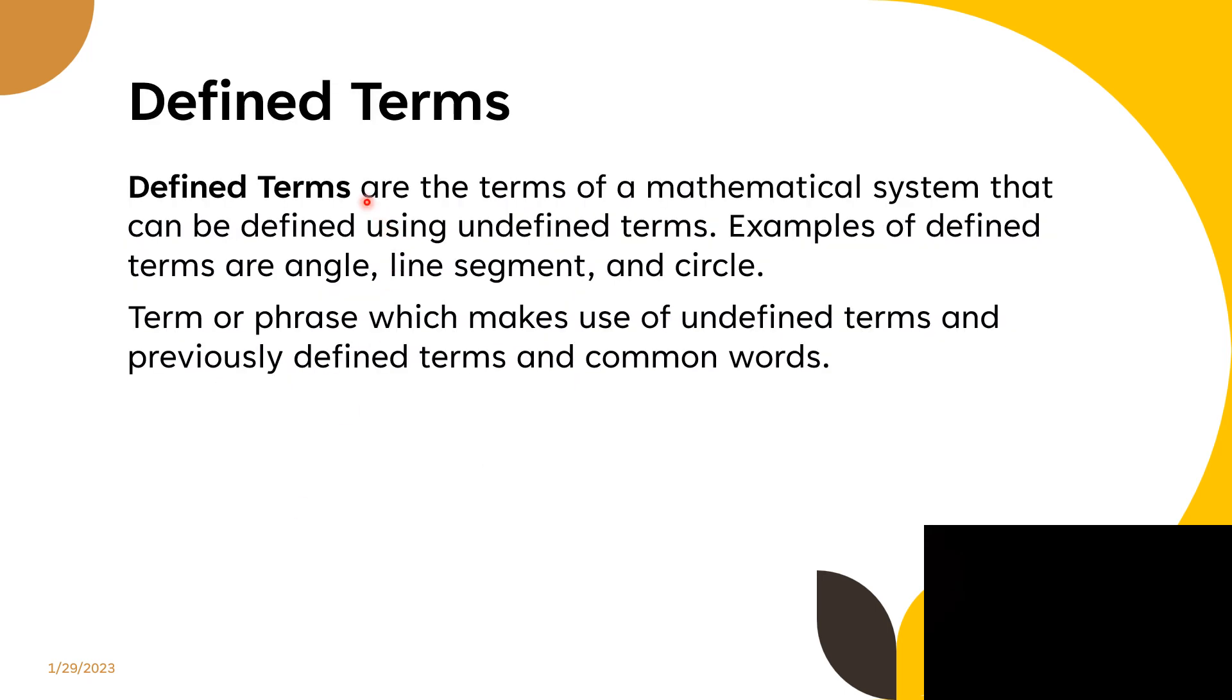What are defined terms? Defined terms are terms of a mathematical system that can be defined using undefined terms and previously defined terms. Examples of defined terms are angle, line segment, and circle. These are named or defined using undefined terms. So terms are phrases which make use of undefined terms and previously defined terms and common words. This we call defined terms.